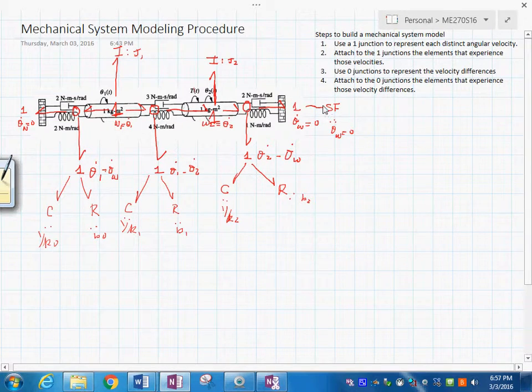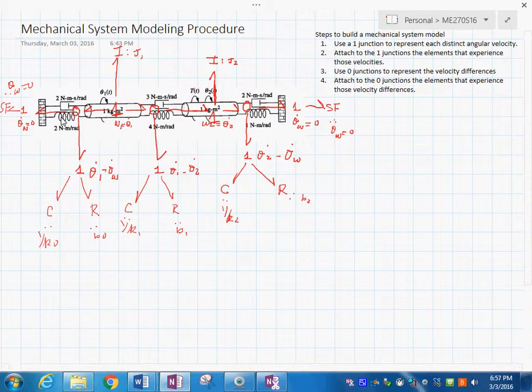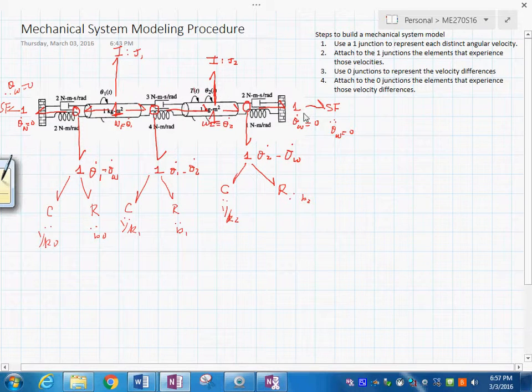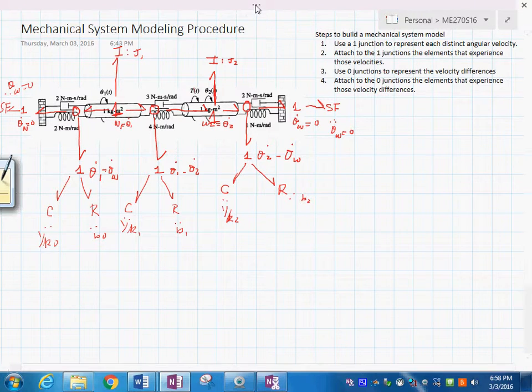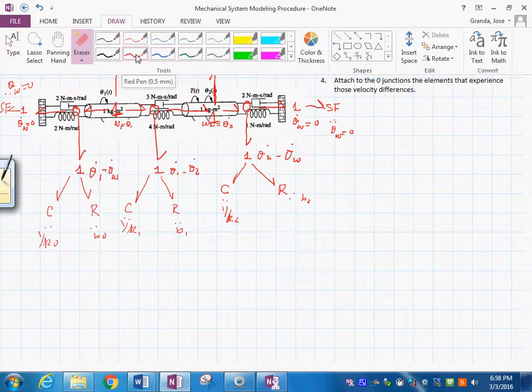And then, on this one too, you see, you have the damping and the spring. So, you have the C element, and then you have the R element. This with value b sub 1. And then, this with value 1 over k sub 1. And then, over here, you see, we also have these ones. You have a C element with value 1 over k sub 0, like this. And this other one, which would be an R element with value b sub 0. And, lo and behold, what happens is that we have been able to draw the entire bond graph.